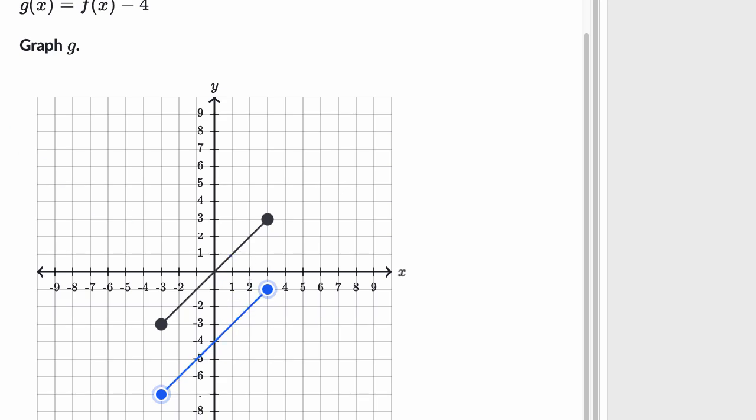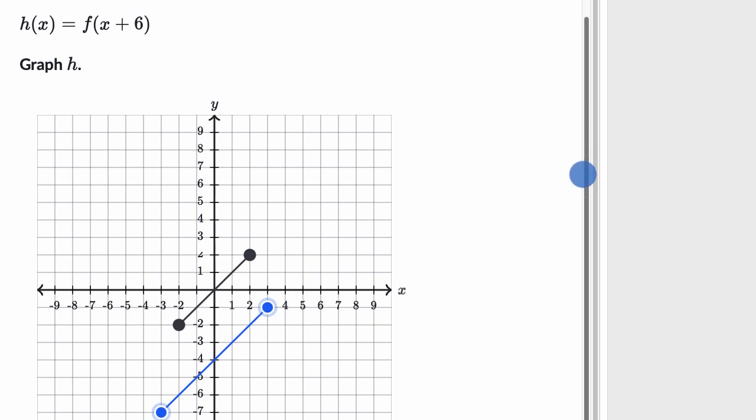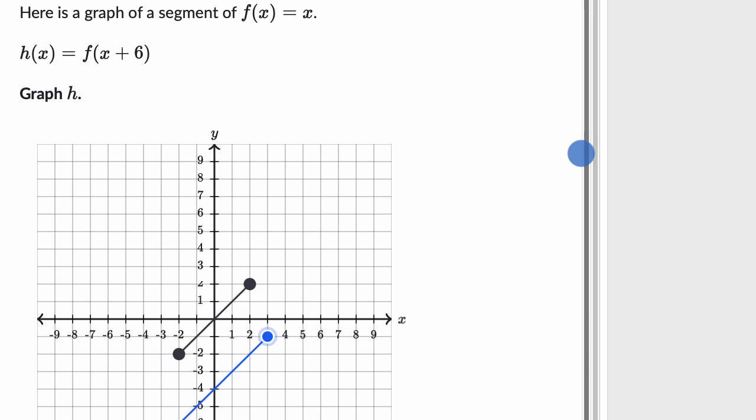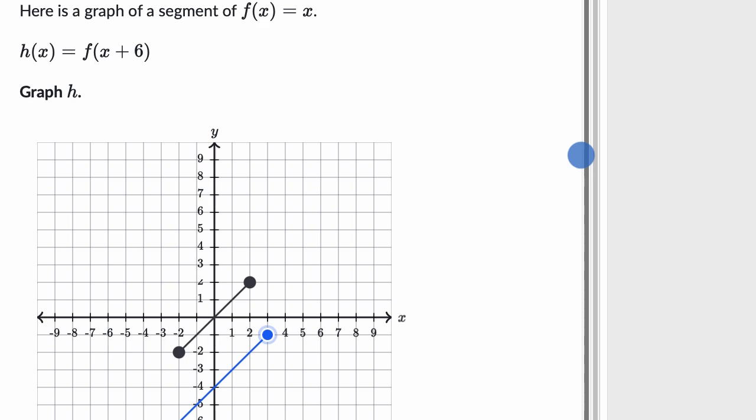Let's do another example. So this one here, here's a graph of a segment of f(x) = x, and now they're saying h(x) = f(x + 6). Graph h.